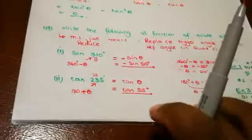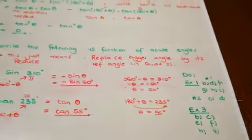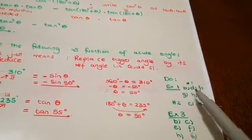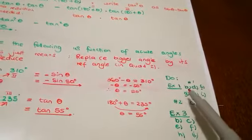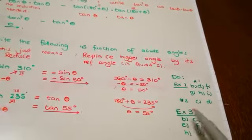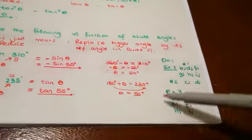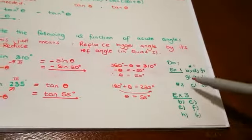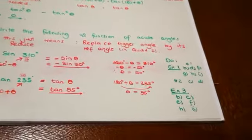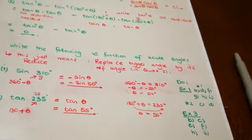So when you reduce: first find the quadrant where the bracket or number is, then write the sign that trig function has in that quadrant, then replace the bracket with theta or solve for the acute angle theta in numerical cases. Please do exercise one, numbers B, D, F, G, H, I, and number two C and D, as well as exercise three. Thank you.